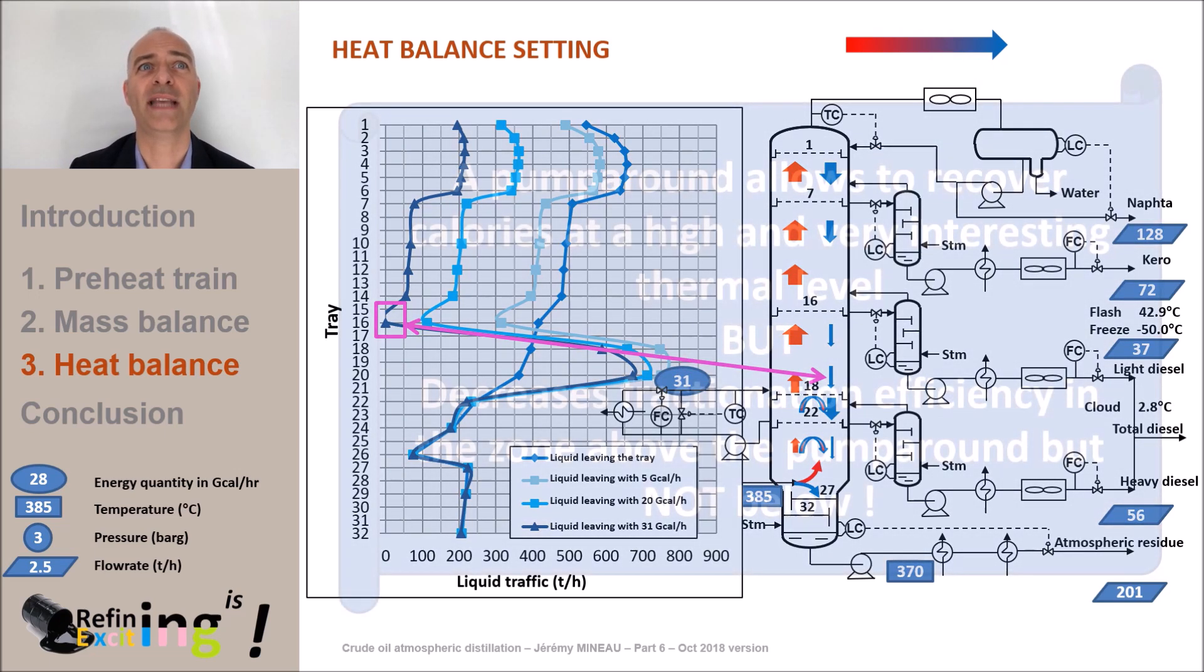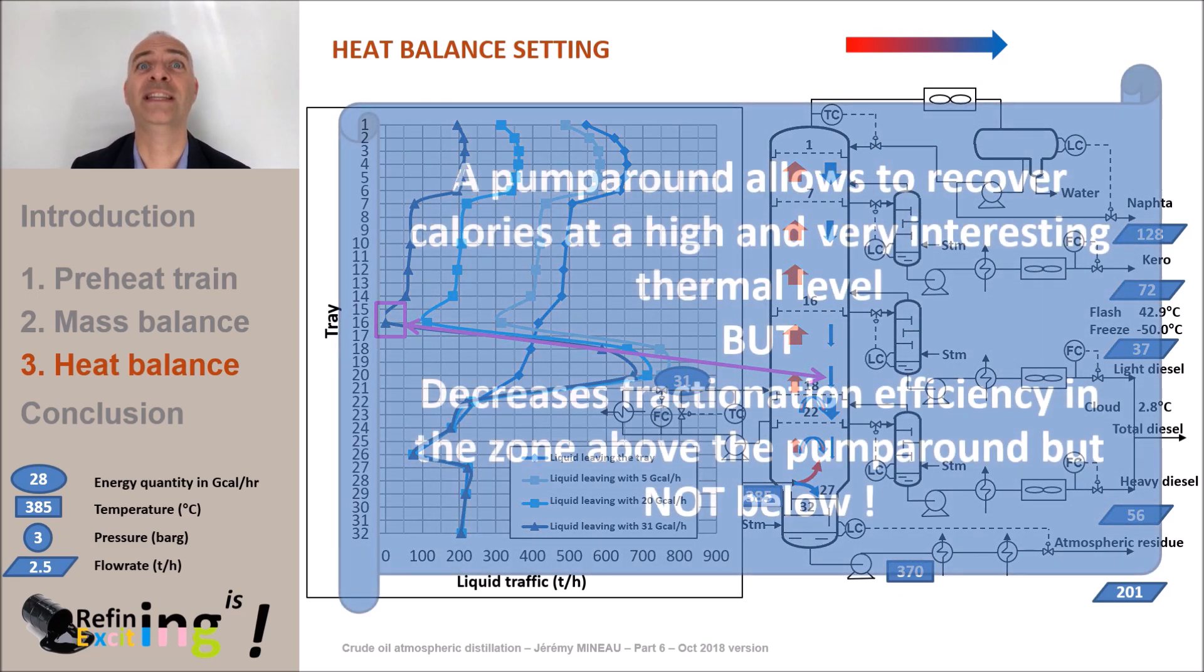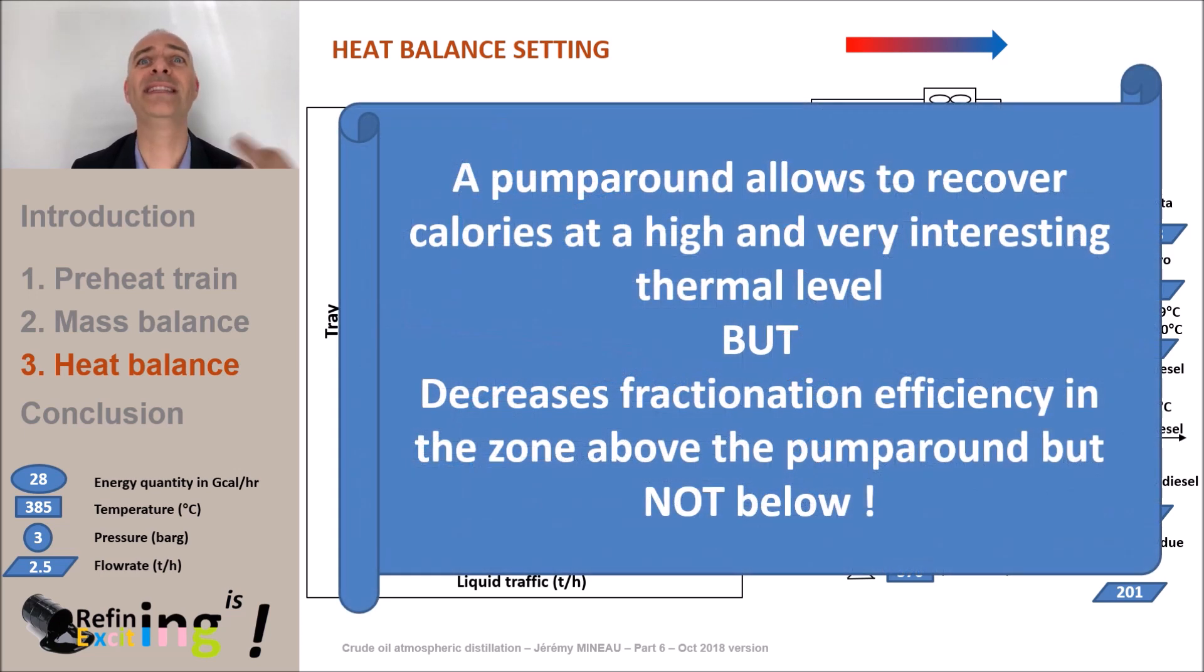If we summarize extracting calories by a pump around, it is very interesting, and we can see that we can recover a high amount of calories. This has an impact on the fractionation efficiency in the zone above the pump around, but not below. It also decreases the overhead condensation duty. We also saw that we had a maximum value that we cannot exceed, otherwise the trays above the pump around will dry out.